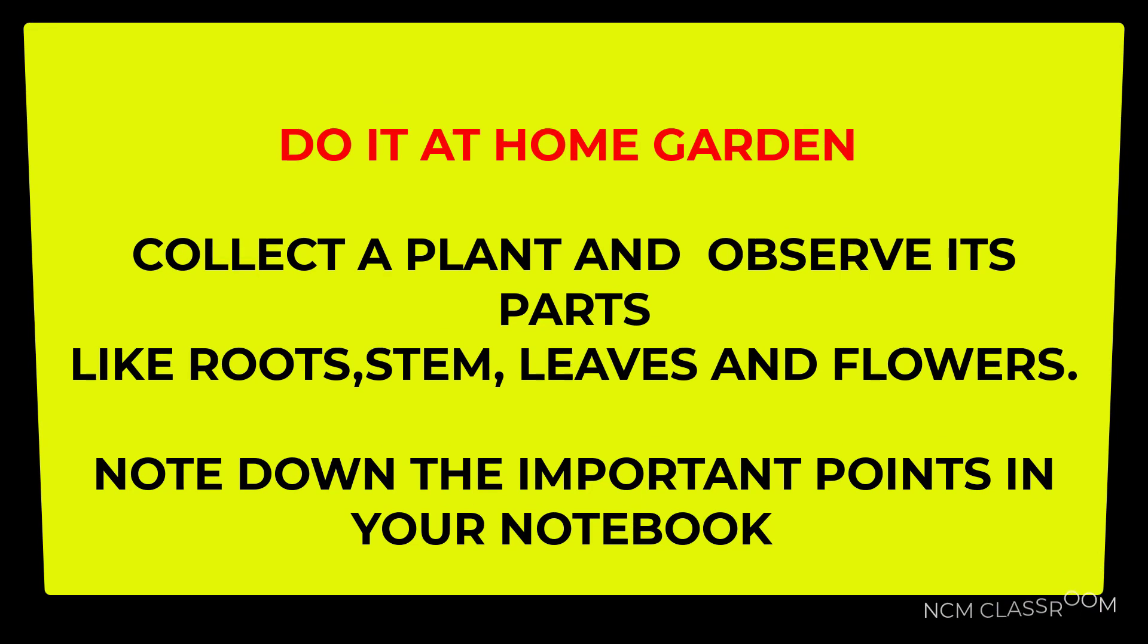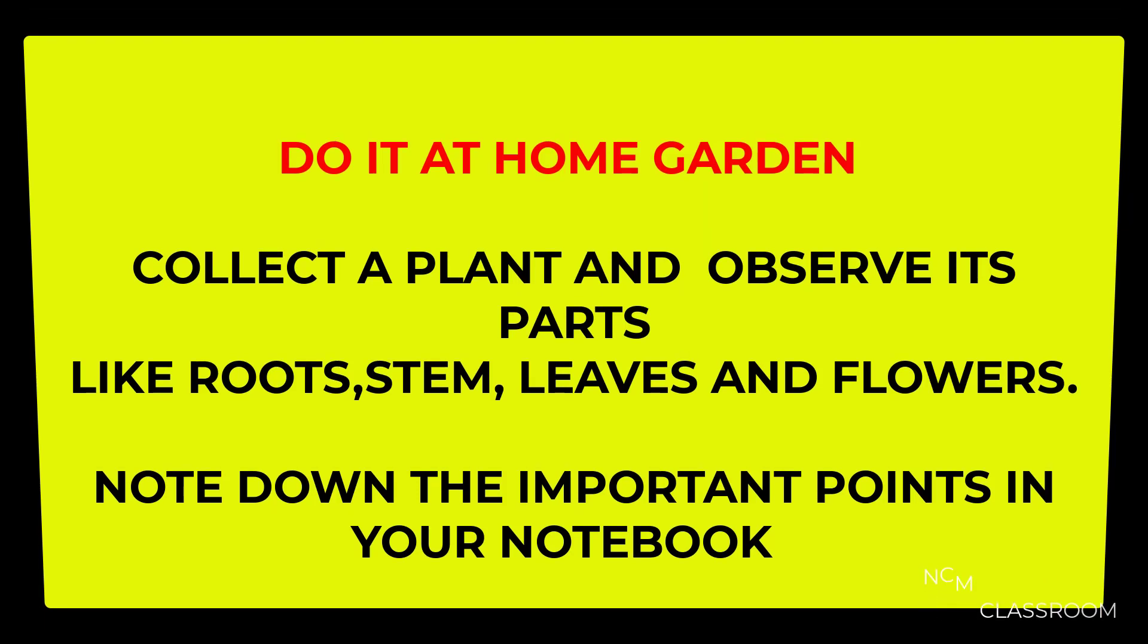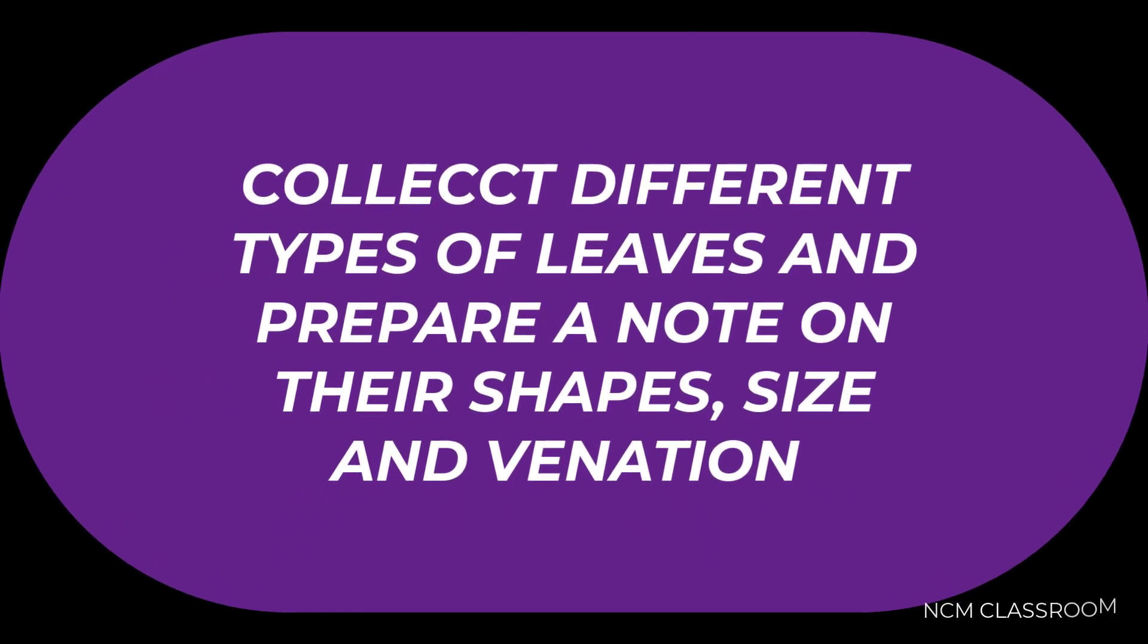Collect a plant and observe its parts like roots, stem, leaves and flowers. Note down the important points. You can use textbook, internet or any source, or you can ask your teacher for the information. Collect different types of leaves and prepare a note on their shapes, size and venation. By doing this you will know the different shapes and sizes of leaves and the type of venation in the leaves.